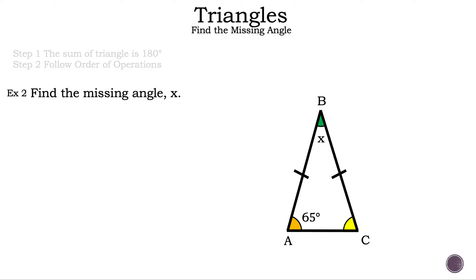So can we find the missing angle? We need to know two angles in a triangle so we can find the third. And in this case, we can, because this triangle is an isosceles triangle, because two of the lines have hatch marks in the middle, which means the two lines have the same measurement. And the two angles that are opposite the hatch marks — the orange angle and the yellow angle — are the same, which means the yellow angle is also 65 degrees.